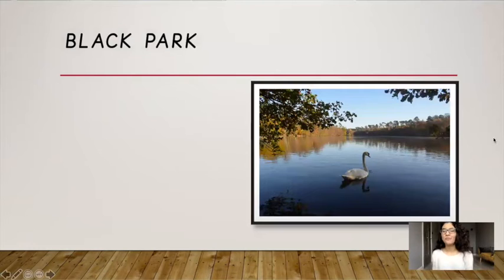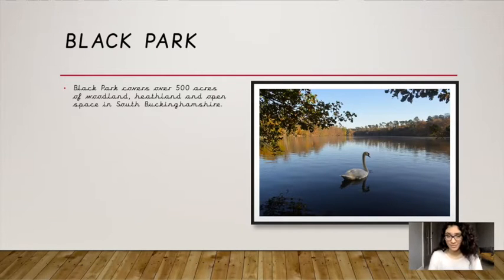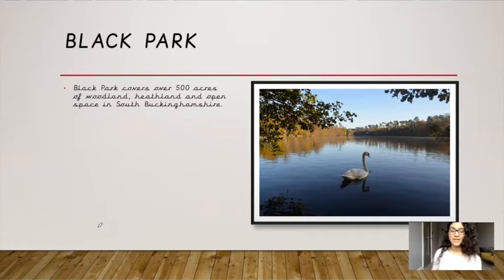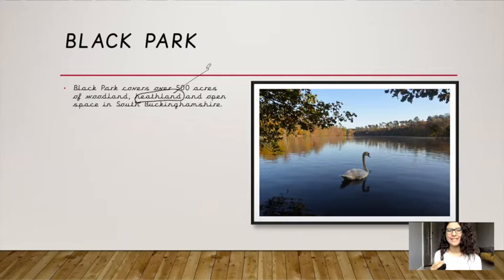Here is a picture of Black Park. Black Park covers over 500 acres of woodland, heathland and open space in South Buckinghamshire. Woodland means an area covered by wood. If you're wondering what heathland means, I've googled this for you — it means an area covered by bushes and shrubs.